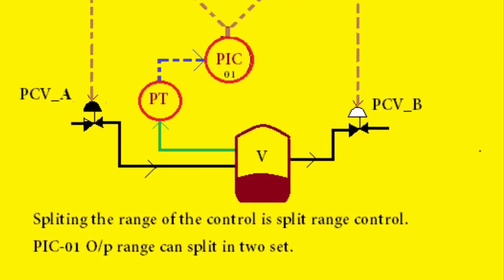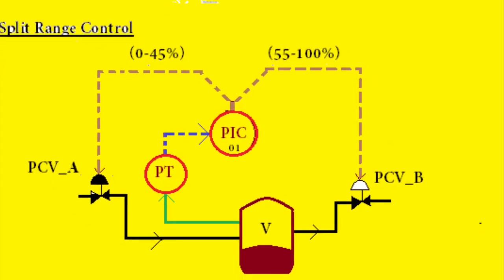That means the output range can be split into two or three. Maximum three splits can be allowed in the split range control. In this example, we are going to see pressure control using split range control.